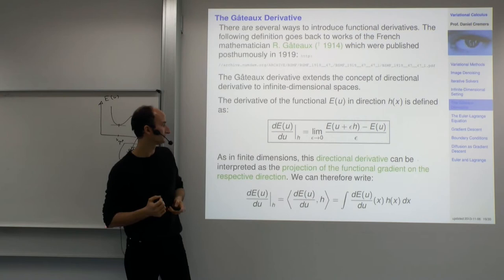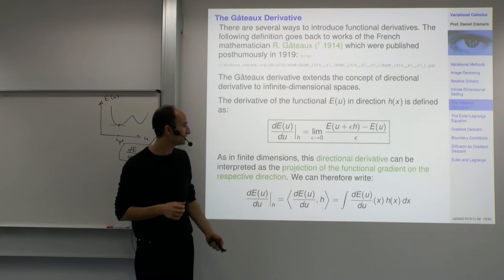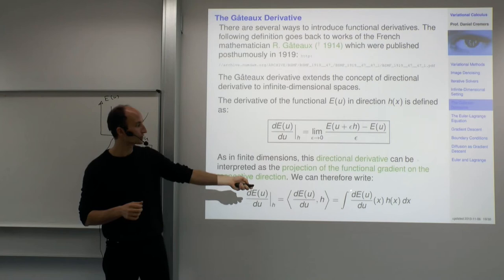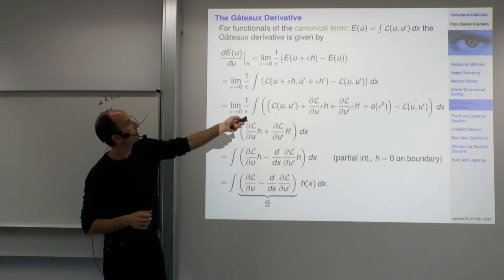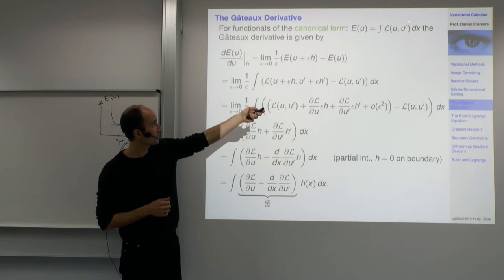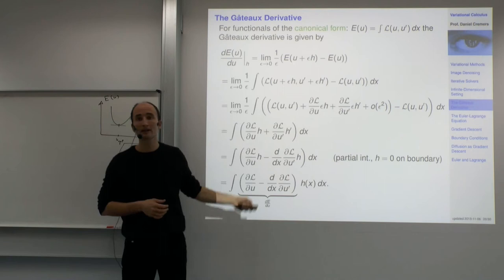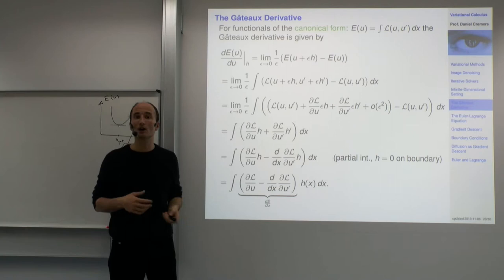All of these degrees of freedom we call h, and the directional derivative can then be represented as the functional gradient dE by dU projected onto h. We take this derivative definition and plug in the canonical form of functionals — functionals that evaluate the cost of u by an integral over all pixels, with some local cost depending on the function value and its derivative.